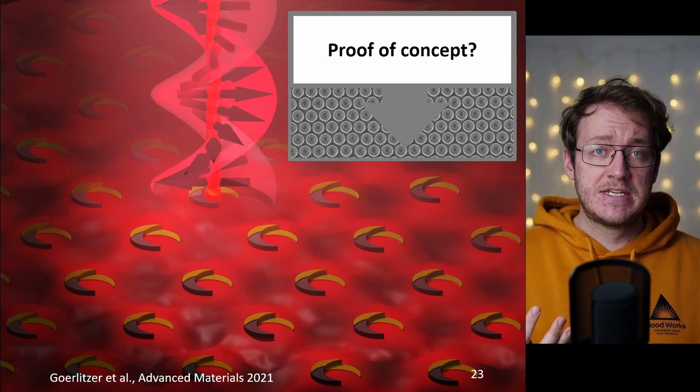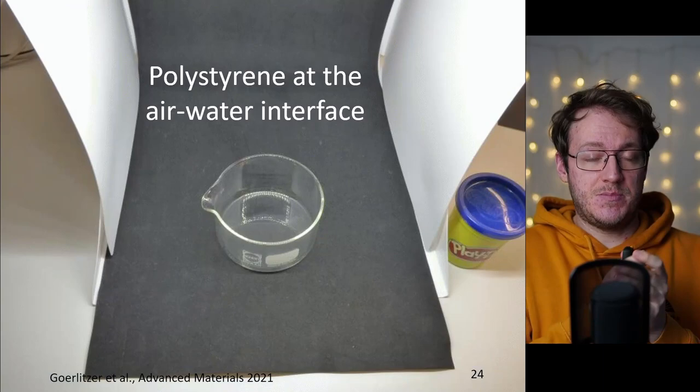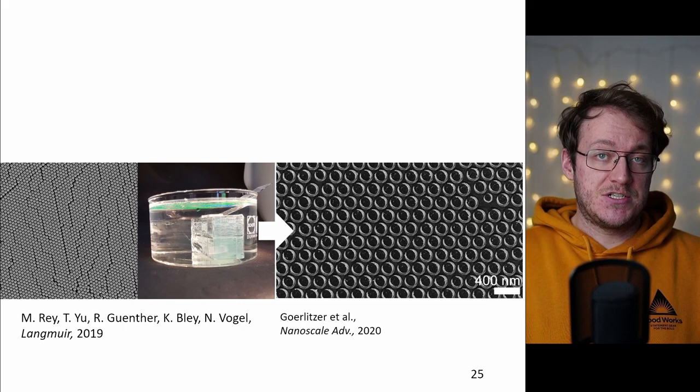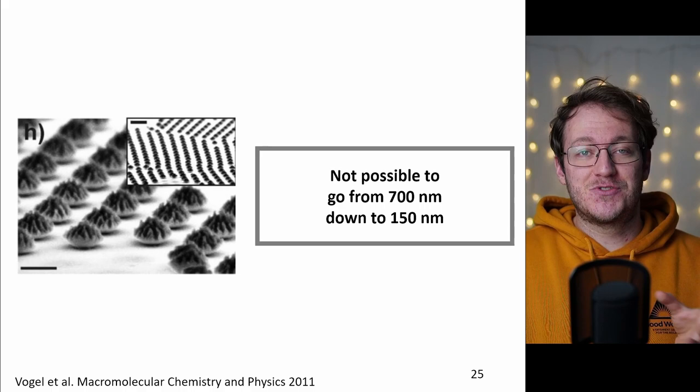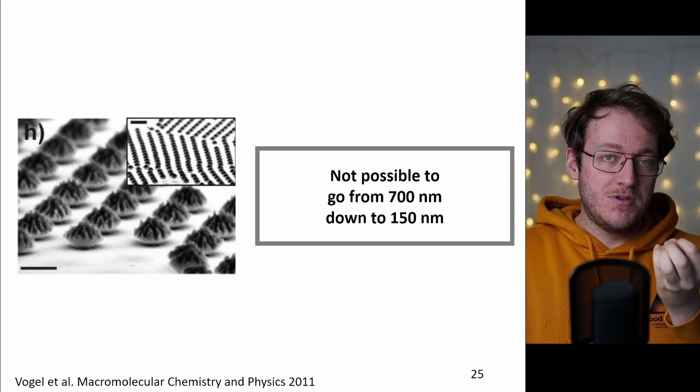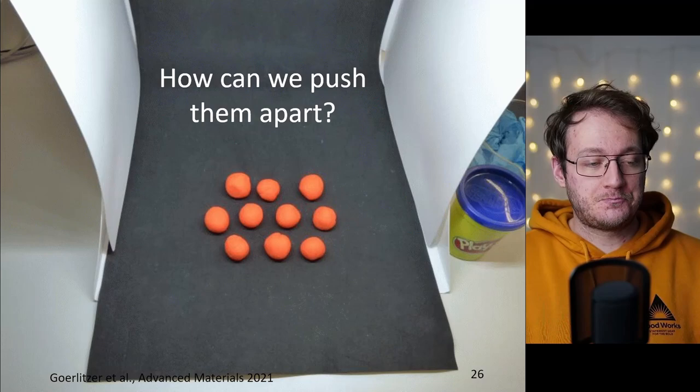Now the question is can we actually demonstrate this in a proof of principle experiment? What we did before is we put the polystyrene particles at the air water interface which always leads to a dense packing and then in order to do the final production of the crescents we always apply oxygen plasma which is then shrinking the particles. Now the problem is when you want to have a spacing of roughly 700 nanometers for 150 nanometer particles you would need to shrink it very much. The problem is the polystyrene particles are falling literally apart and they are losing their spherical character and they are looking very rough so we cannot use polystyrene particles anymore.